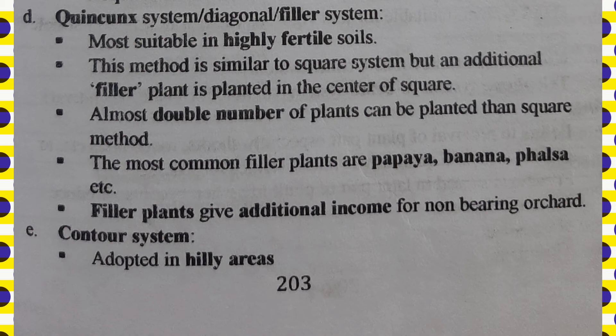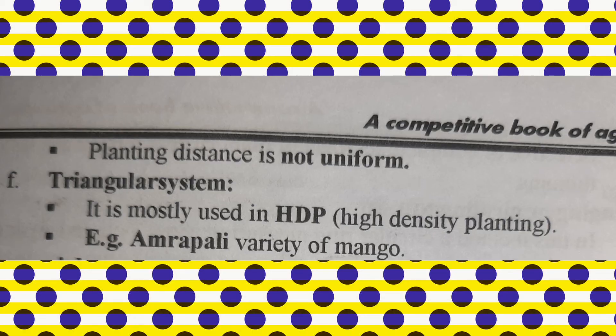The contour system is adopted in hilly areas only, where the land level is not uniform and planting distances are not uniform either — plants are placed based on the terrain situation. The triangular system is used in high-density planting; for example, mango Amrapali variety is used in high-density planting using this system.